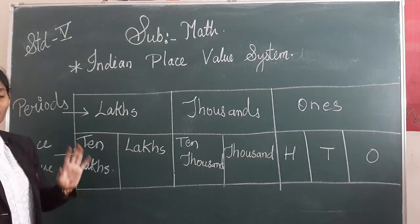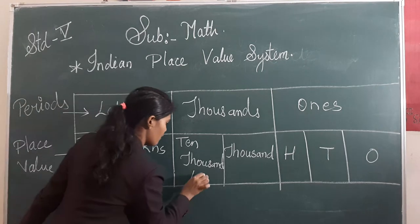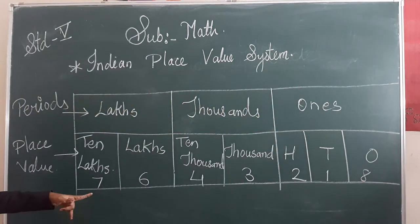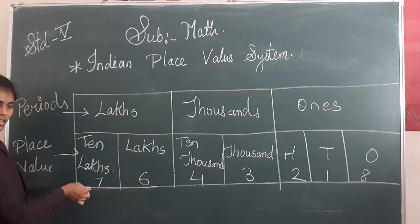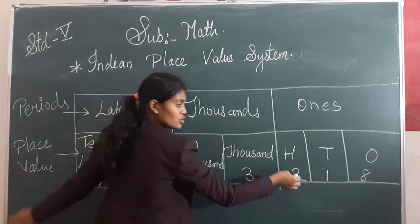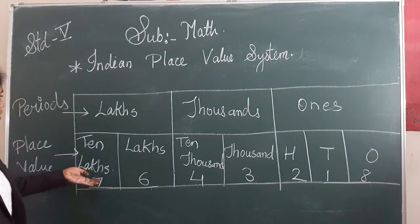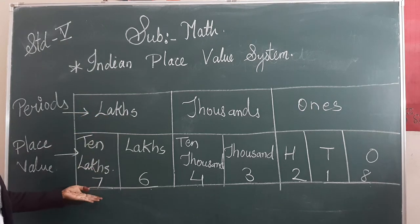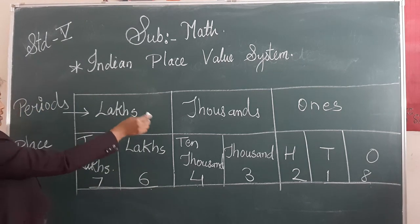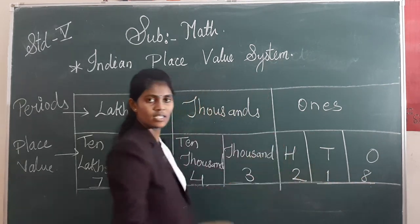With the help of periods, we can also identify and read numbers. Suppose I write here: seven, six, four, three, two, one, eight. How will you read this number? Seventy-six lakhs, forty-three thousand, two hundred and eighteen. We are reading with the help of the period.